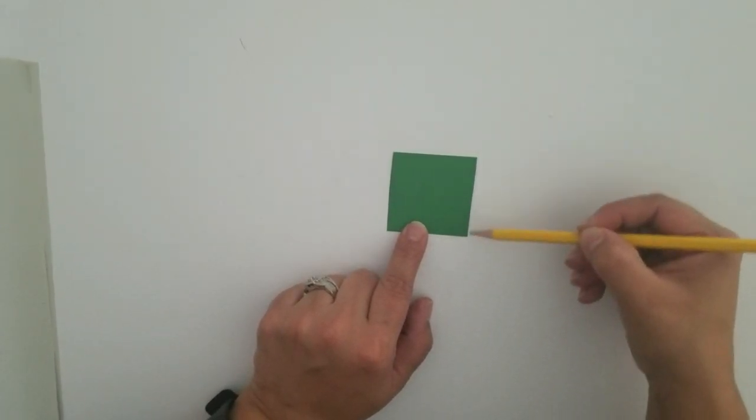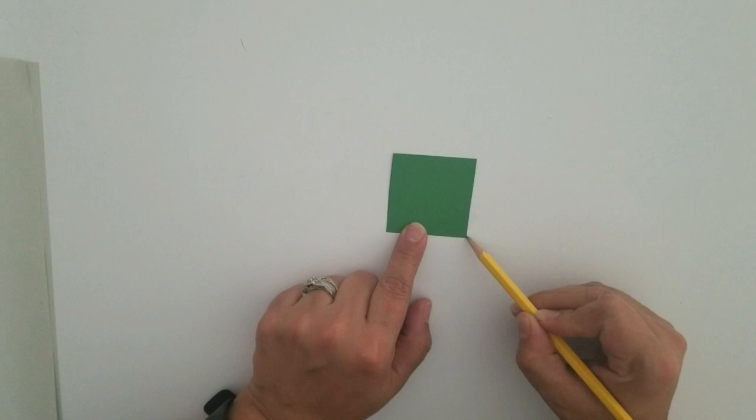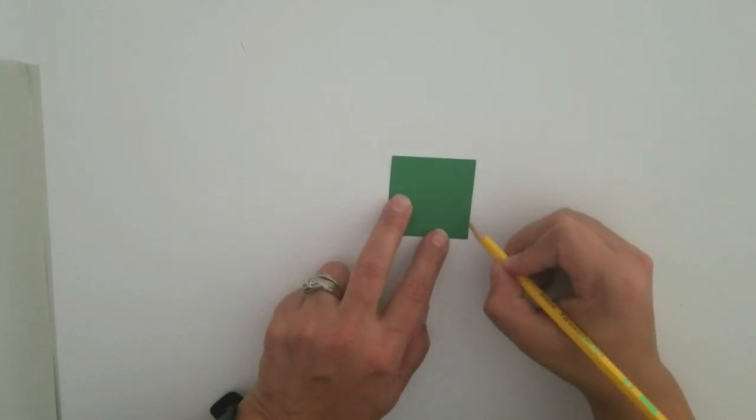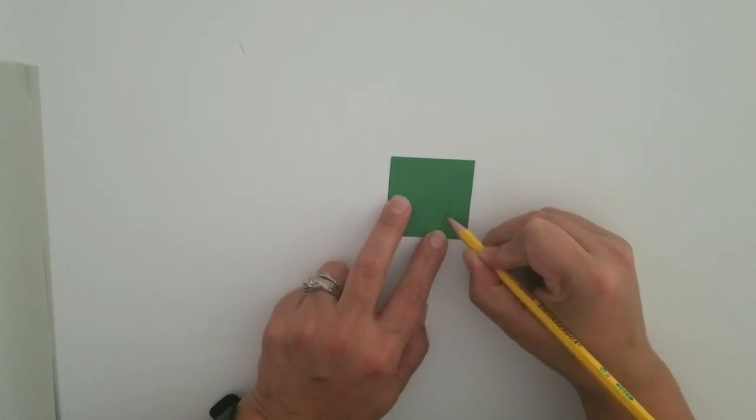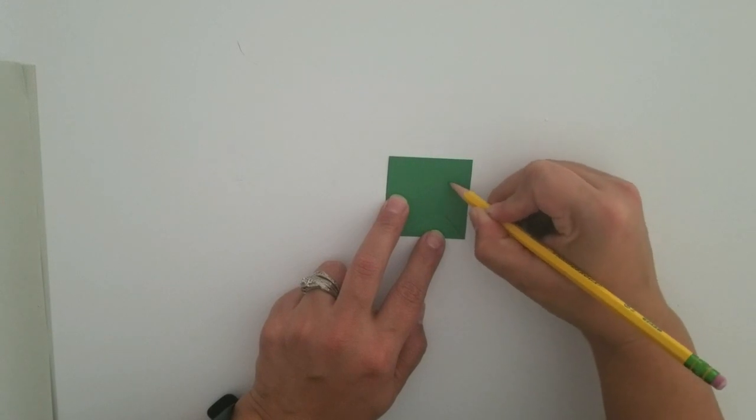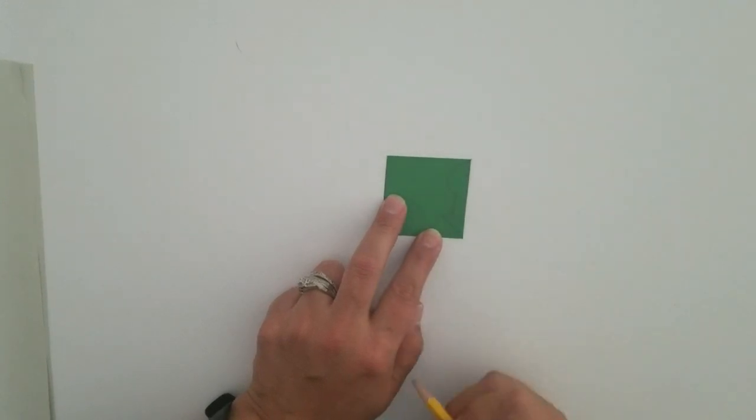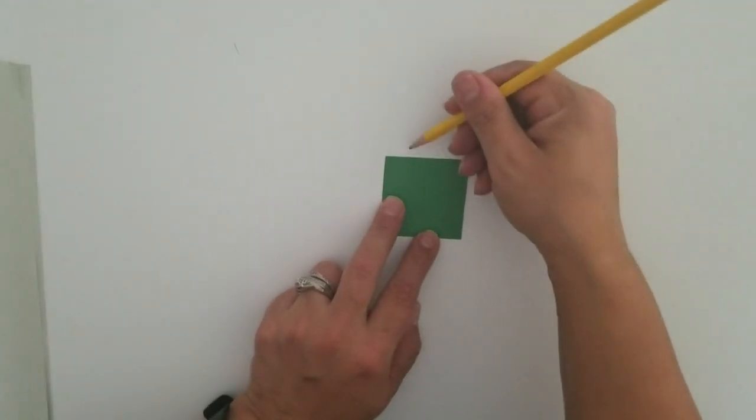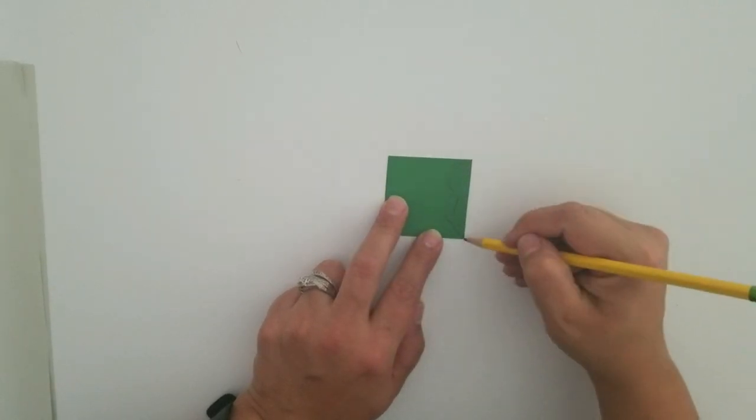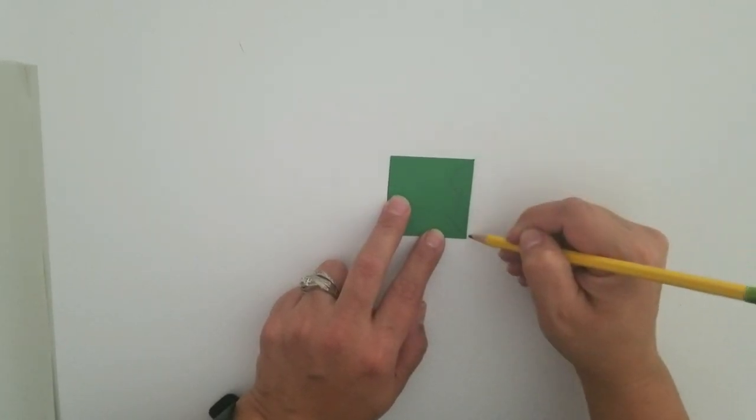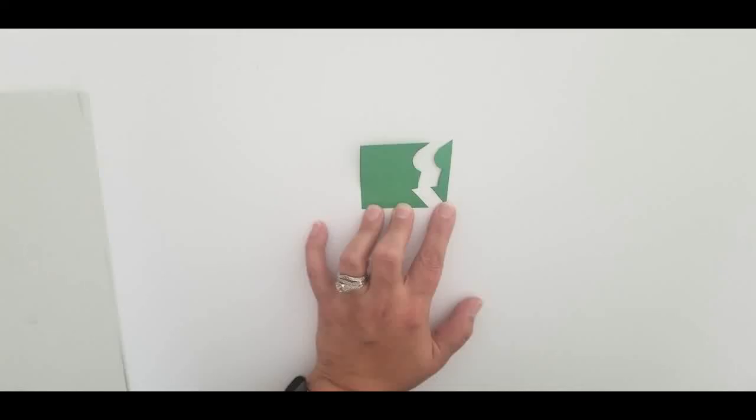Using your pencil on the right edge of your square, you are going to draw a line that goes from one corner on that right edge to the other corner on that right edge. Try not to go to a different edge of your square. Stay on the same edge. Carefully cut off that piece from the edge of your square.